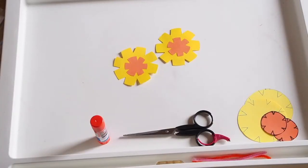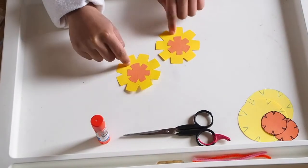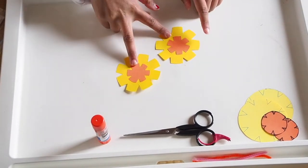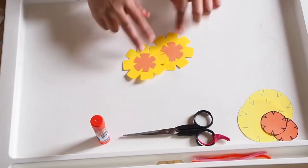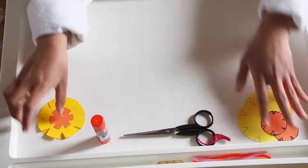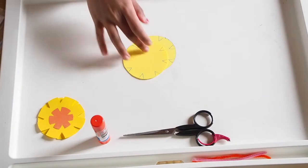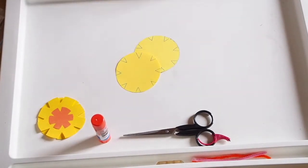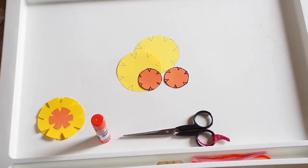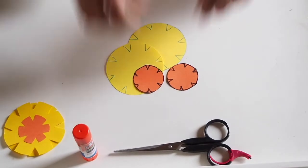Okay, now we're going to move on to the dandelions. So we're going to make two of them and we'll be needing these ones. So we need our two big yellow circles and two small orange circles.